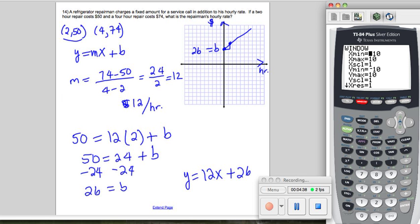So that we could see the y value of 74, I'm going to change the y value, the y max to be 100, and I'm changing the y scale to be, say, every 20. I did that by pressing the window key, which is right next to the y equals key.